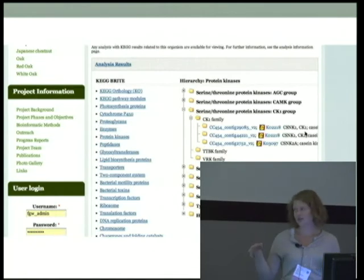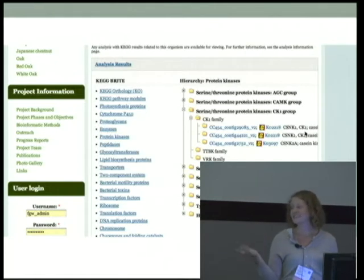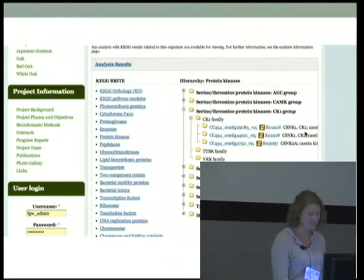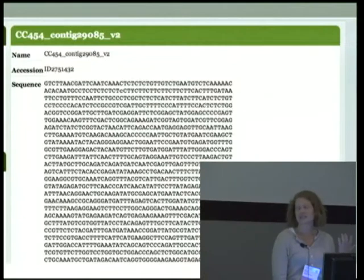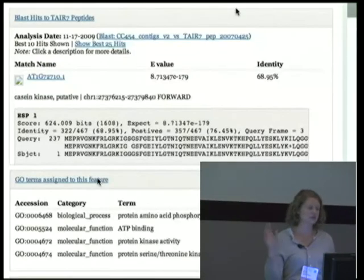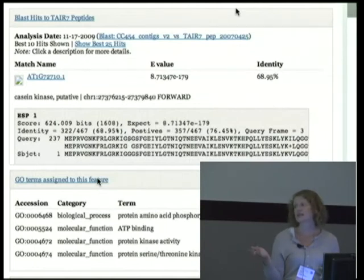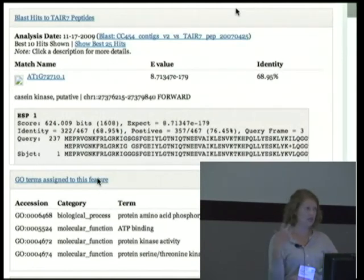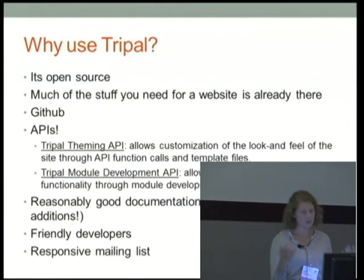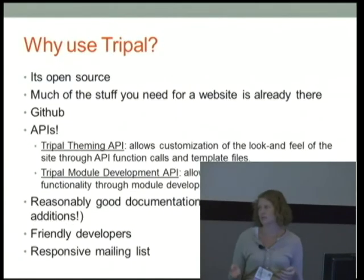If you go through the KEG tab you can drill down into different protein families, see your unigenes, you can click on a unigene and of course look at the sequence. If you scroll down you can see your blast hits and you can see GO terms. So all of these types of things are available — you can probably see where I'm going if you've used community websites like this.